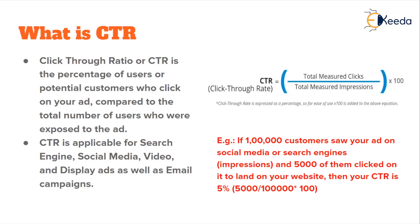Let's look at an example. Let's say one lakh customers saw your ad on social media — Facebook or Google. This is information available to you in terms of impressions made by the ad. If the ad is for designer purses, anytime a user searches anything relevant — designer accessories, designer purses, designer purse in my area, or relevant keywords around which you have designed your ad — and the page loads with your ad, that is counted as an impression by the server for your particular ad.